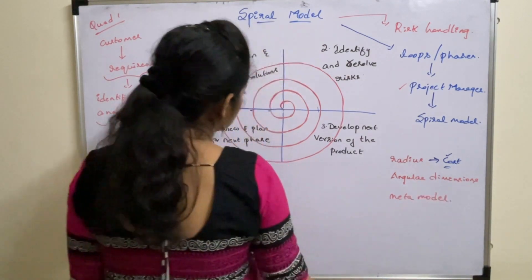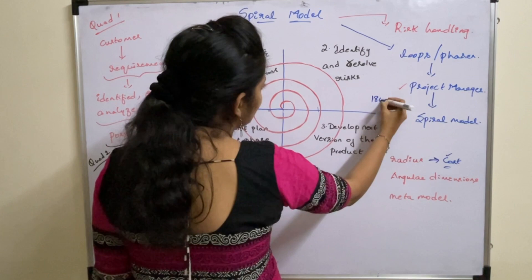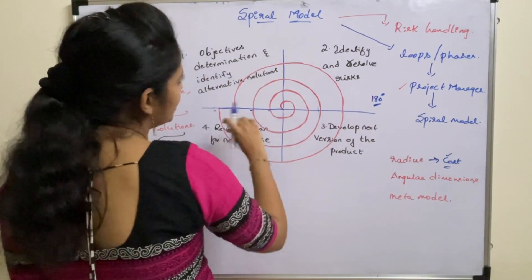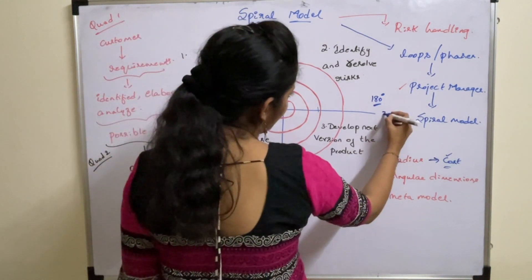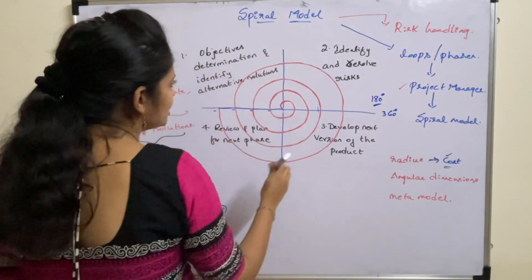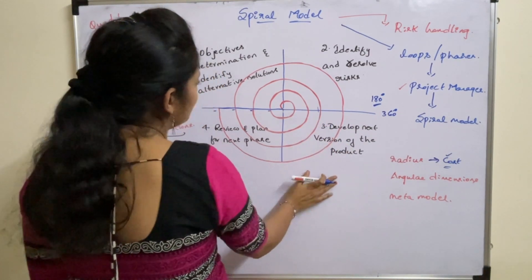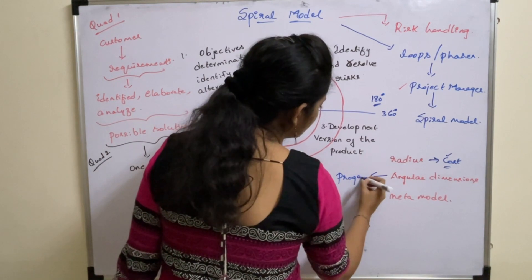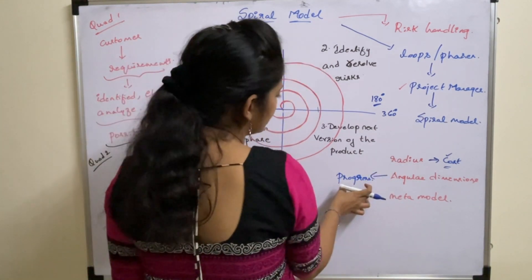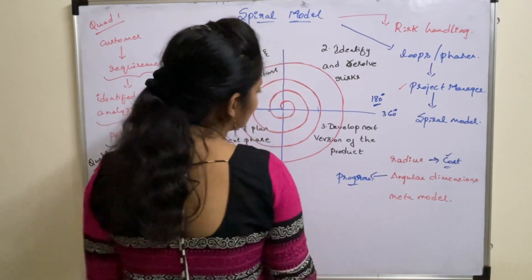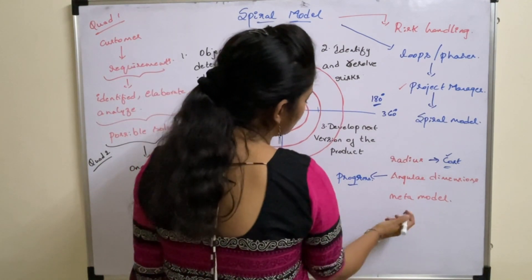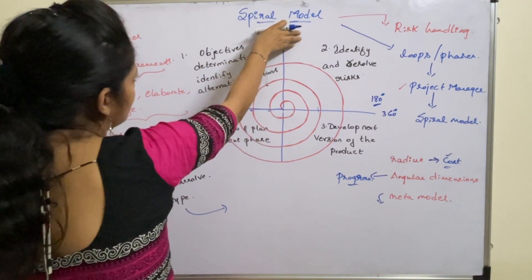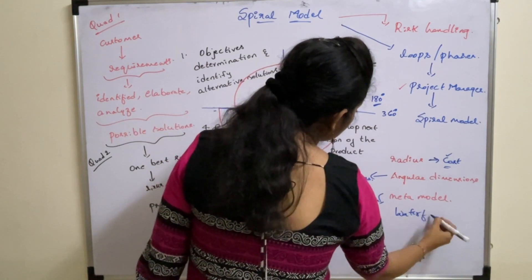Regarding angular dimensions: if we cover 180 degrees, we have completed only two quadrants or two portions of the project. If we complete 360 degrees, it indicates we have covered all four portions of the model. Angular dimensions represent the progress of the model — that is, how much of the project has been completed.